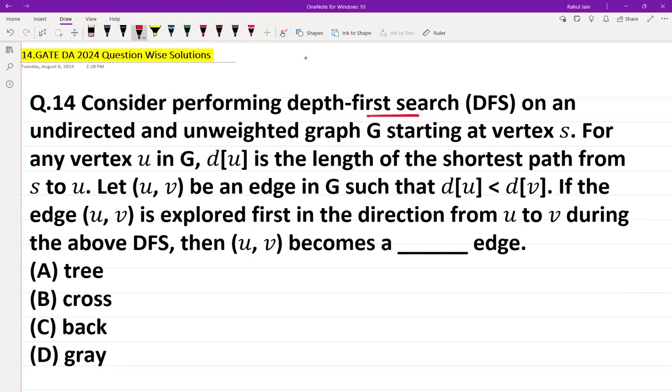DFS on an undirected and unweighted graph G starting at vertex S. For any vertex U in G, d[U] is the length of the shortest path from S to U. Let (U, V) be an edge in G such that d[U] is less than d[V].